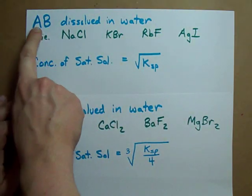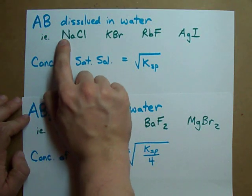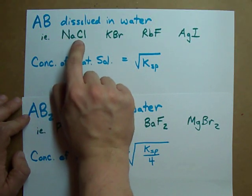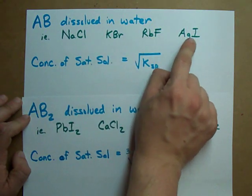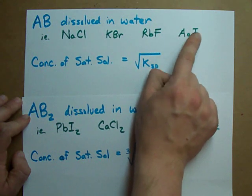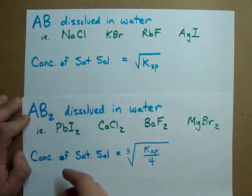If you have an ionic compound and you have one of the cation and one of the anion - NaCl, one in one, KBr, RbF, AgI - there's only one of each kind of ion, your concentration is just the square root of your KSP.